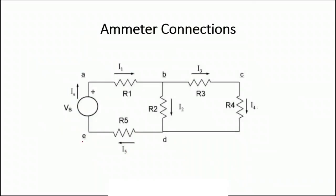Now let us discuss the ammeter connections. Ammeter is used for the measurement of current, and here we will be using a milli-ammeter because the value of current we are supposed to measure will come under the range of milliamperes. Ammeters are always connected in series.